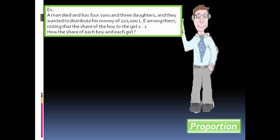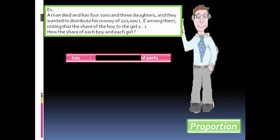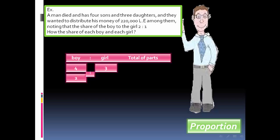How the share of each boy and each girl? Boy to girl: 4 boys and 3 girls. The share of each boy is 2, and the share of the girl is 1.